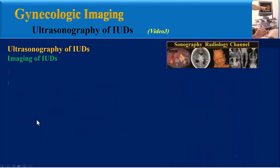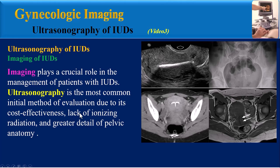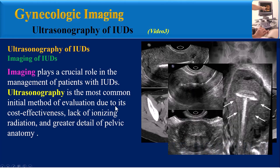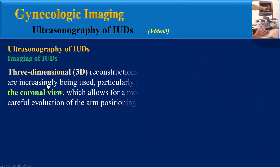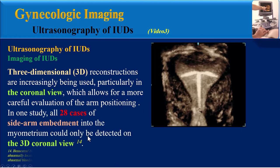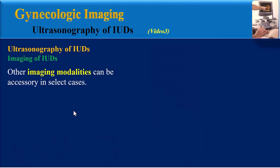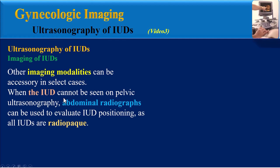Imaging plays a crucial role in the management of patients with IUDs. Ultrasonography is the most common initial method of evaluation due to its cost-effectiveness, lack of ionizing radiation, and greater detail of pelvic anatomy. Three-dimensional reconstructions are increasingly being used, particularly in the coronal view, which allows for more careful evaluation of arm positioning. In one study, all 28 cases of side-arm embedment into the myometrium could only be detected on the 3D coronal view.